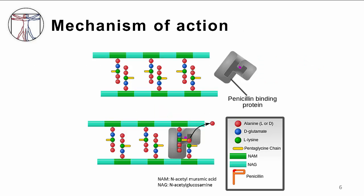During normal bacterial cell growth, transpeptidase enzymes, known as penicillin binding proteins, act in the bacterial cell wall to bind peptide side chains, as shown here. This reaction forms the crosslinks that compose the bacterial cell wall.